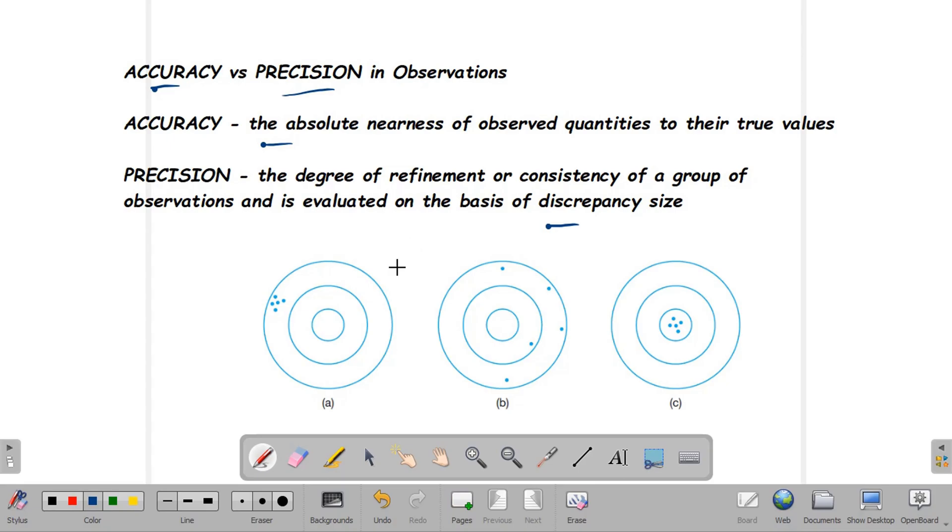By illustration, this diagram shows the difference between accuracy and precision.